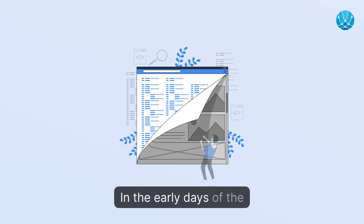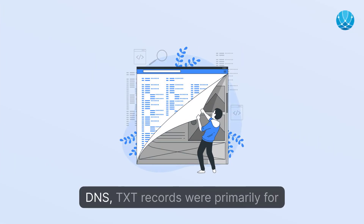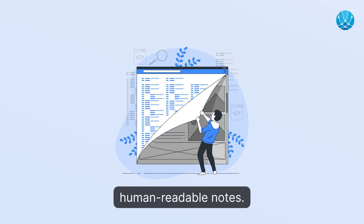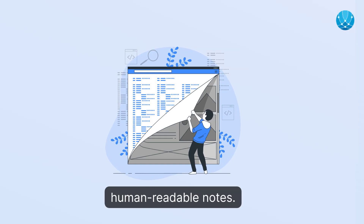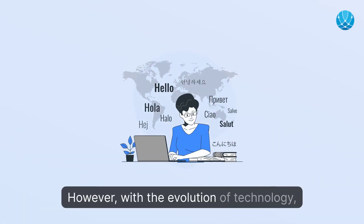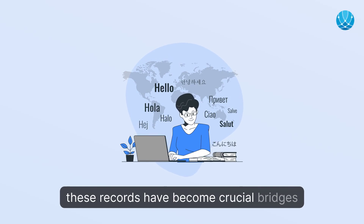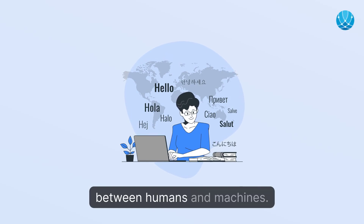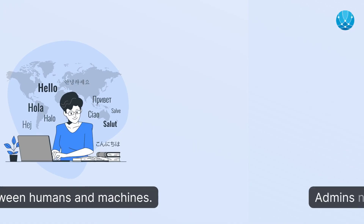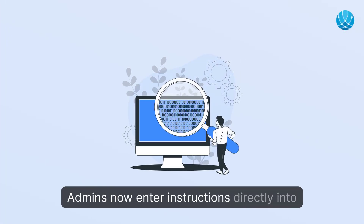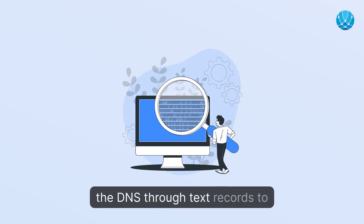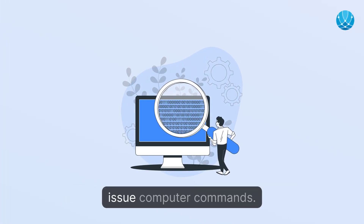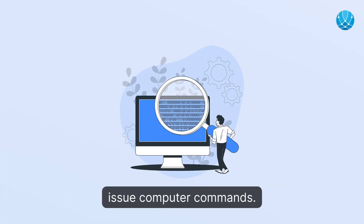In the early days of the DNS, text records were primarily for human-readable notes. However, with the evolution of technology, these records have become crucial bridges between humans and machines. Admins now enter instructions directly into the DNS through text records to issue computer commands.